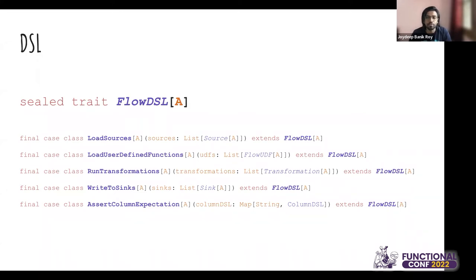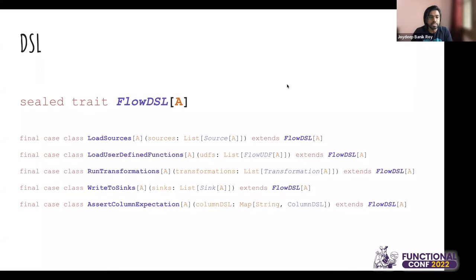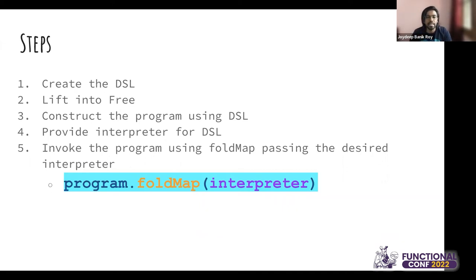We defined a trait `FlowDSL`, and all our ADTs — atomic units — extend this `FlowDSL`. One important thing: it returns a generic type A, because loading user-defined functions might return Unit, while asserting column expectations might return an expectation result. The sequence of steps we perform is: create the DSL, lift it into Free, construct the program using the DSL, provide an interpreter, and invoke the program by calling `foldMap` passing the interpreter separately.